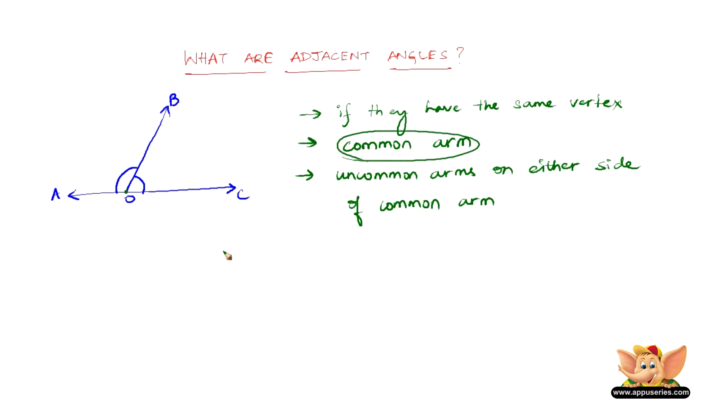And common arm is nothing but this line, which is the same for both these angles. Say the B, O, C also has B, O and then A, O, B also has B, O. So that is what is called common arm.